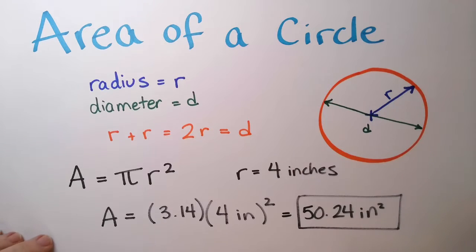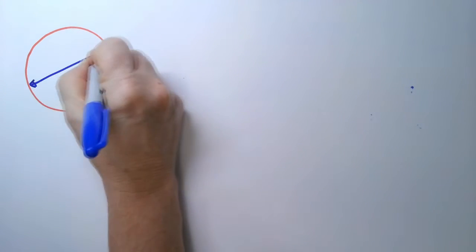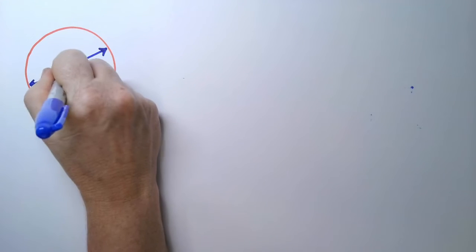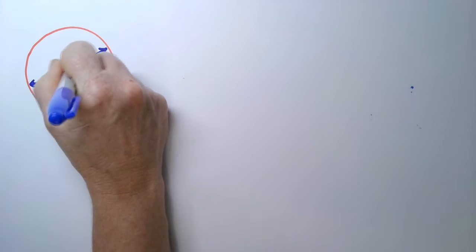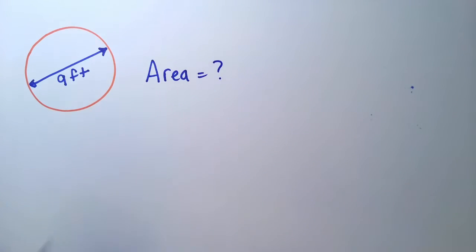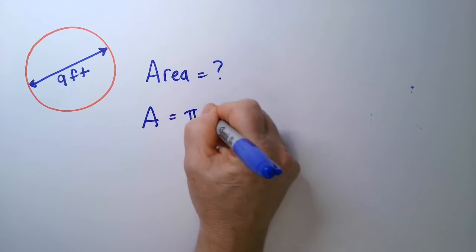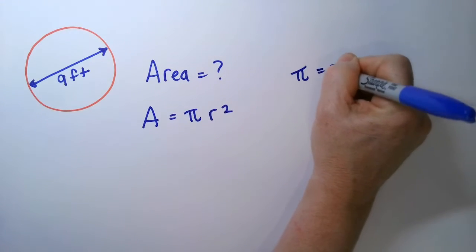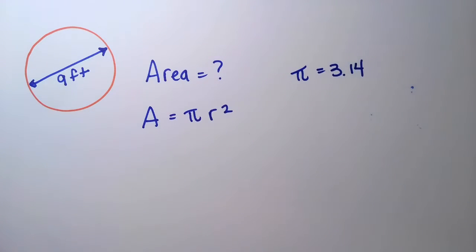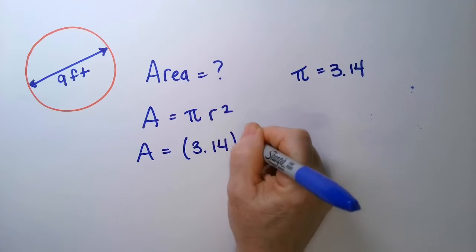Let's try a couple more examples. I have a circle that is measuring a diameter of 9 feet, and I want to know what is the area. So my area is pi R squared, and for pi we use 3.14 typically. So my area starts with 3.14.